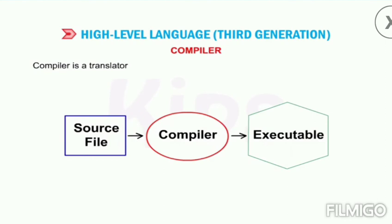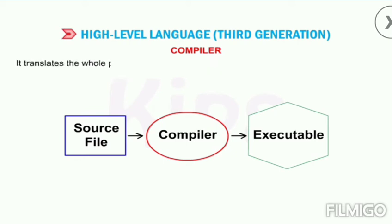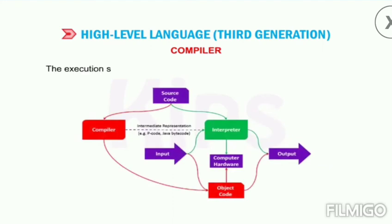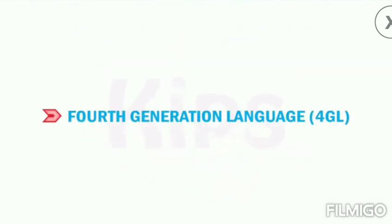A compiler is a translator program used to convert a high-level language program into machine language. It translates the whole program at once, generating the object code along with a list of errors. The execution speed of a compiler is faster compared to an interpreter.